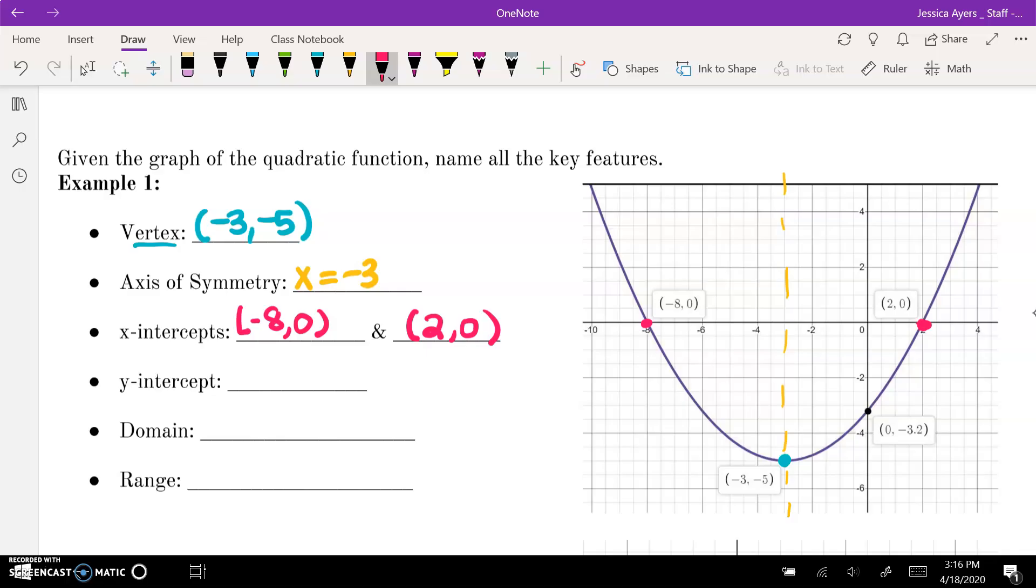For the y-intercept, it's where the graph crosses the y-axis. That would be right here. And we can see that that is zero, negative 3.2. Notice that the vertex, x-intercepts, and y-intercepts are all a point. Thus, we write them as a coordinate pair, x comma y with parentheses around it. The axis of symmetry is a line, so it's written as an equation. This is the format that you want to use to write all of these answers.